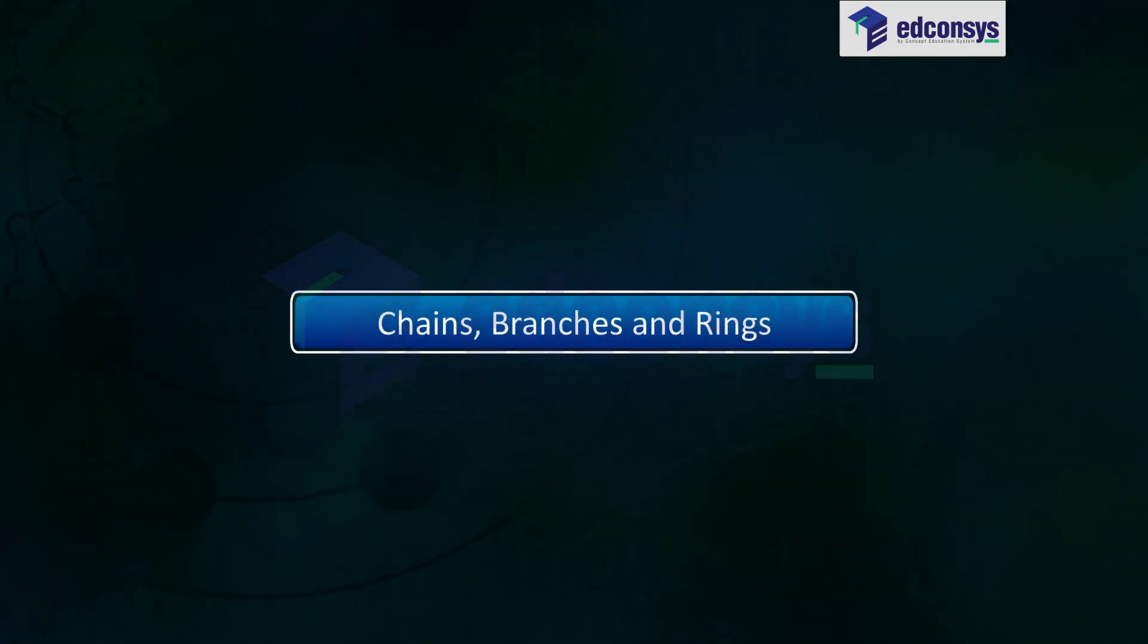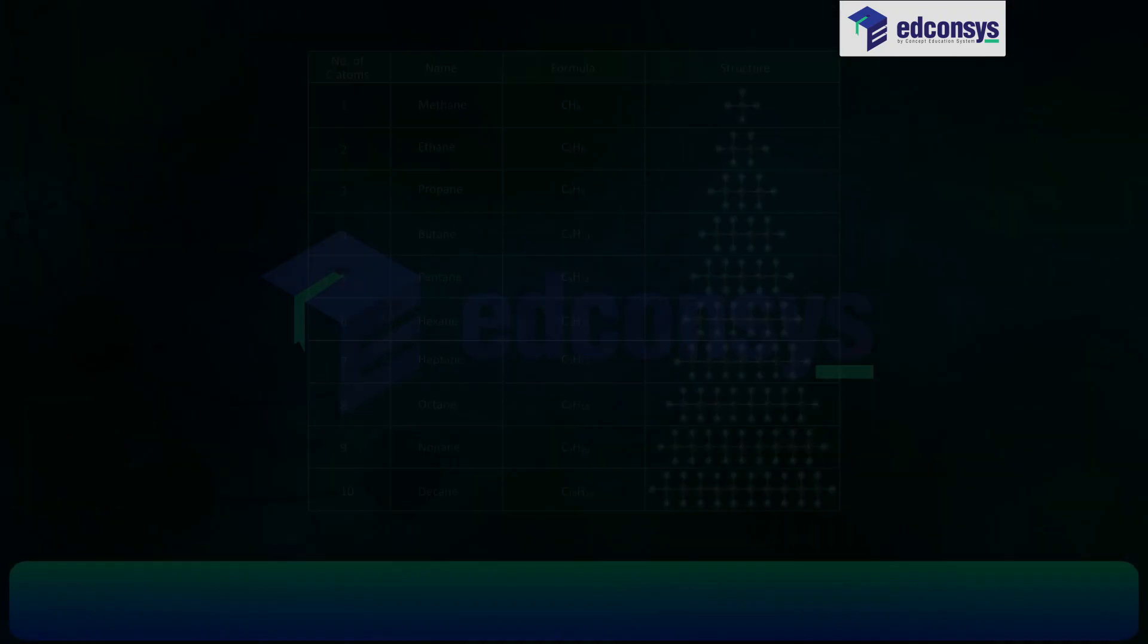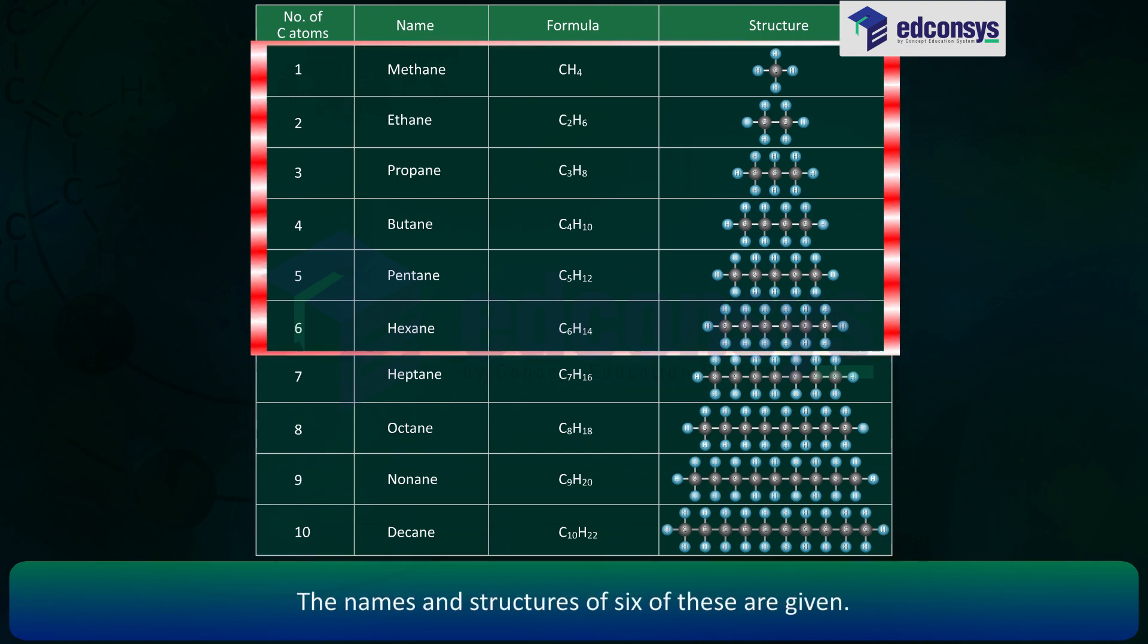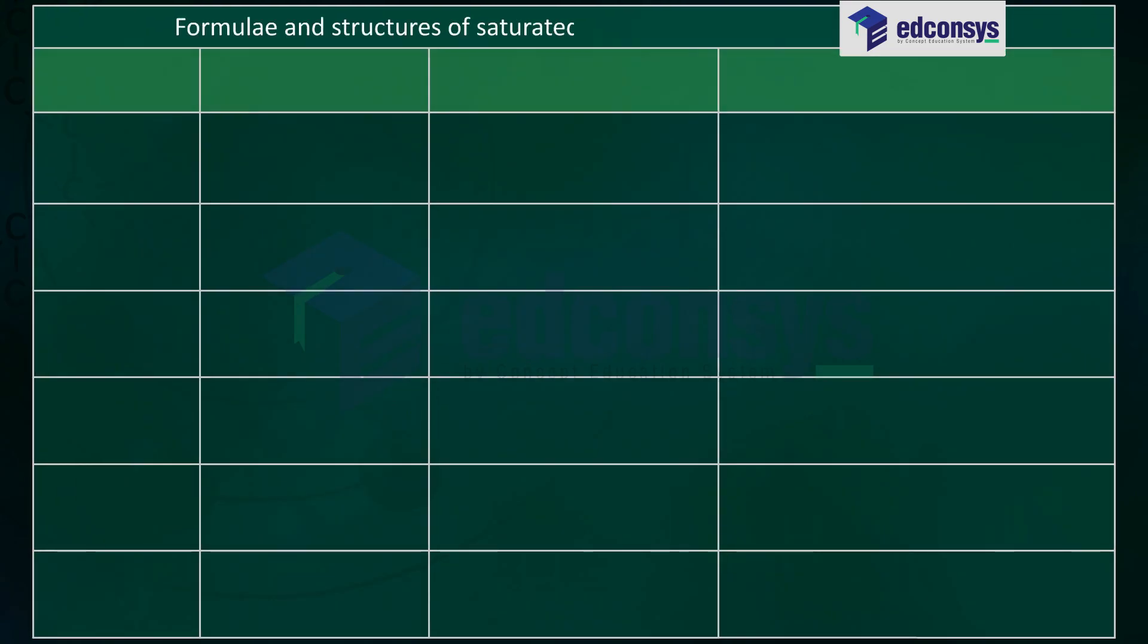Chains, branches and rings. Such chains of carbon atoms can contain tens of carbon atoms. The names and structures of six of these are given: formulae and structures of saturated compounds of carbon and hydrogen.